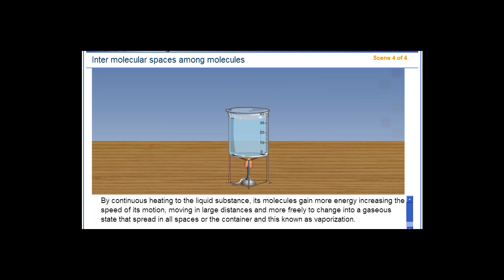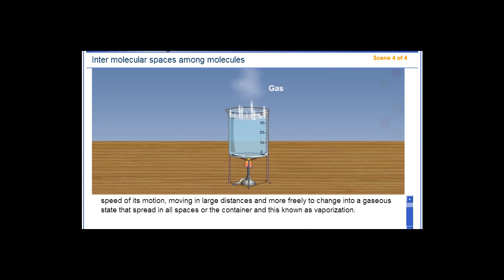By continuous heating of the liquid substance, its molecules gain more energy, increasing the speed of their motion, moving large distances, and becoming more free to change into a gaseous state that spreads in all spaces of the container. This is known as vaporization.